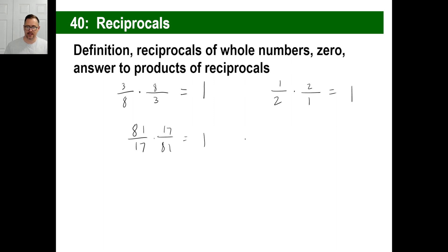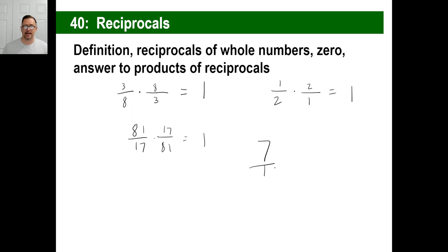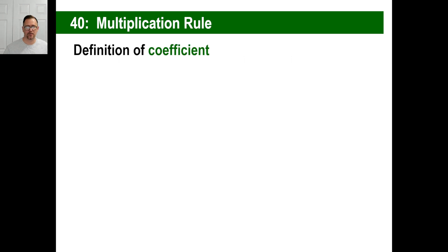Let's say someone gave you seven. What's the reciprocal of seven? If you had seven as a fraction — seven over one — you'd know the reciprocal is one-seventh. Same thing. Let's look at how this is helpful in algebra.